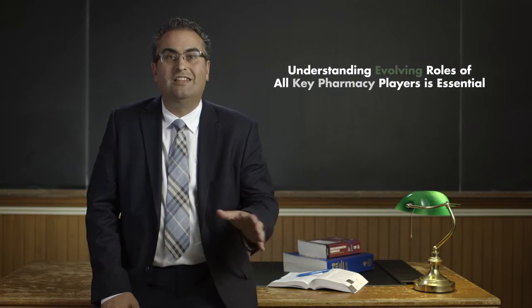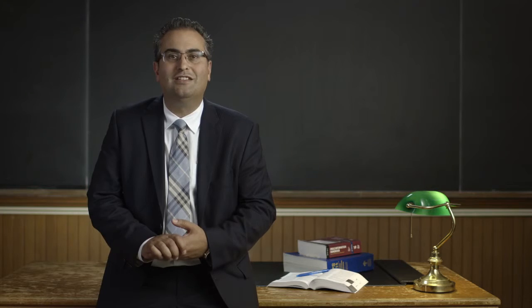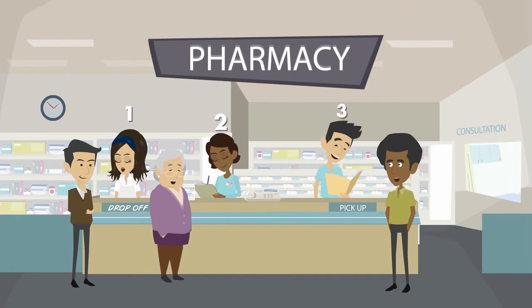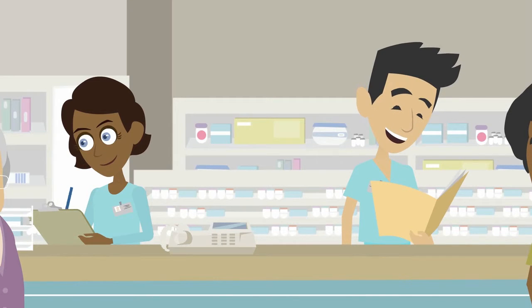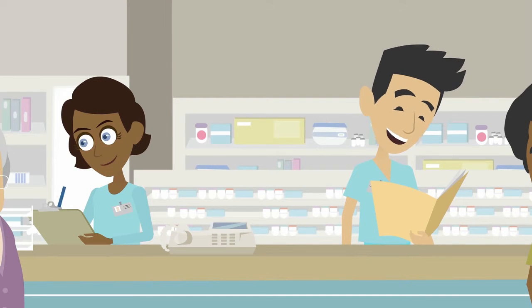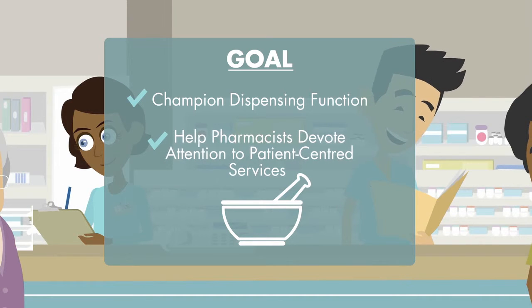Next, we'll move on to the third concept: understanding the evolving roles of all the key pharmacy players is essential. Let's observe the workflow in a dispensary that has been optimized to offer consistent, sustainable professional services. In this example, there is one regulated pharmacy technician and two dispensary assistants available to complete technical tasks and appropriately direct patient queries. The pharmacist is free to focus on professional services and address patient health concerns. The ability to offer sustainable patient-centered services extends beyond the pharmacist — dispensary assistants and regulated technicians are instrumental in the successful implementation of these programs. Their primary goal is to champion the dispensing function such that pharmacist time dedicated to technical tasks can be limited and devoted instead to patient-centered services.